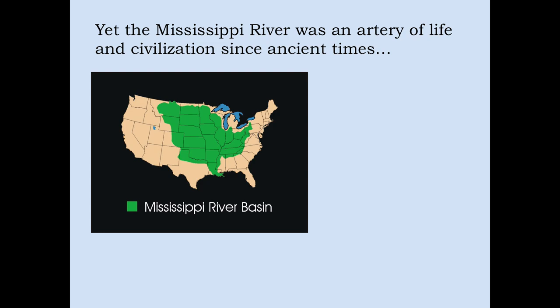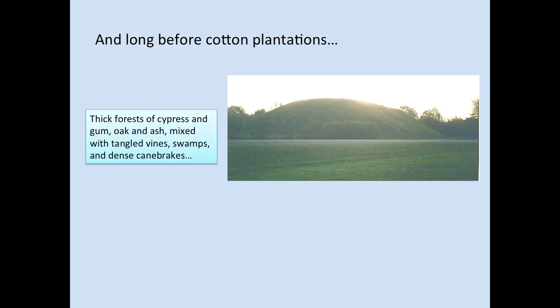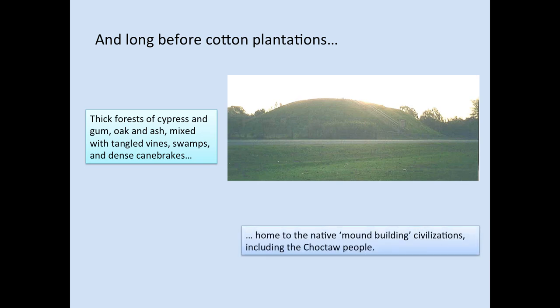Yet the Mississippi River itself has been an artery of life and civilization long before the arrival of cotton planters. Native peoples used the river for transportation, connection, trade, commerce, and the exchange of culture. The Mississippi was a natural artery for such exchanges across the broad middle section of the North American continent and the Gulf of Mexico. And long before those cotton plantations, the region was thickly forested with cypress, gum, oak, and ash trees mixed with tangled vines, swamps, and dense cane breaks.